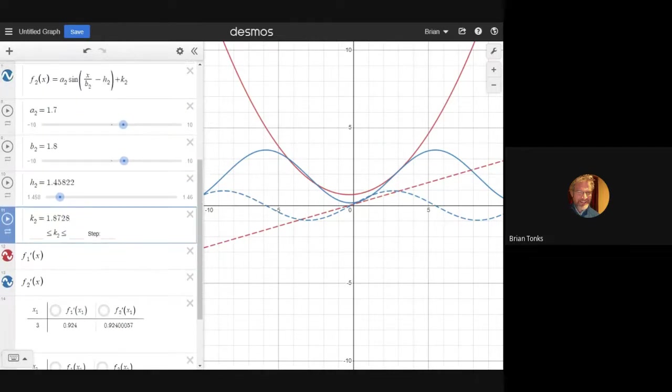So now I've got a pretty simple a value and a pretty simple b value for the dilation, the stretching and compression. I've got a little bit more complicated h and k for the shifting to make it be exactly the right place to switch.